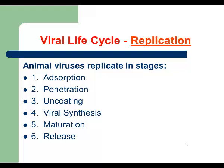There are six stages in the replication of animal viruses. The first stage is called adsorption — adsorption means attachment. The next stage is penetration, followed by uncoating, then viral synthesis, then maturation, and finally release. We're going to go through each stage and talk about them in greater detail.